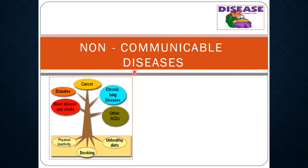Moving ahead to the next type of disease — the non-communicable diseases. In a diagram, the roots represent the causes of non-communicable diseases and the branches represent examples. Non-communicable diseases can be caused due to physical inactivity, smoking, and unhealthy diets. The diseases caused by these factors include chronic lung diseases, cancer, diabetes, heart diseases, and others.